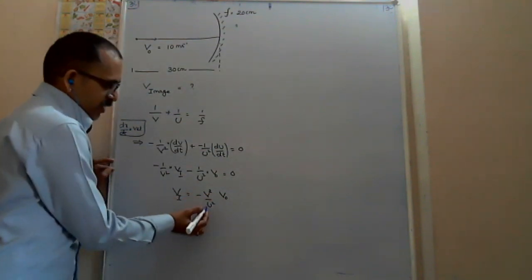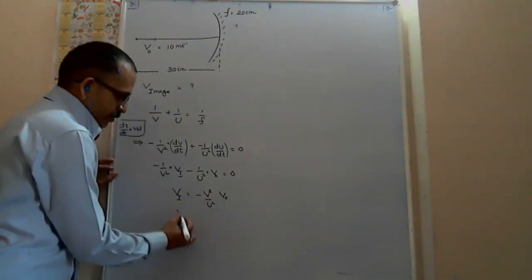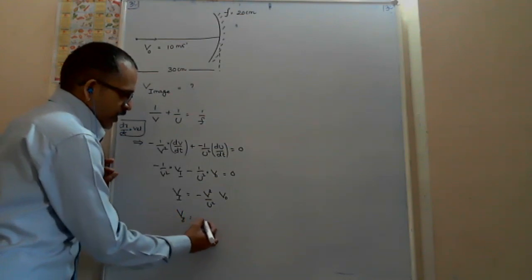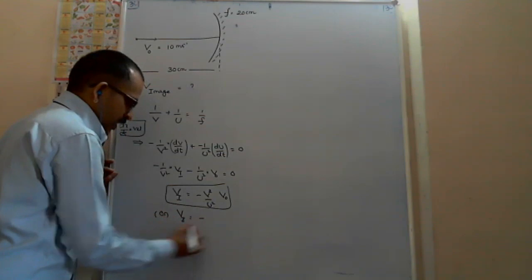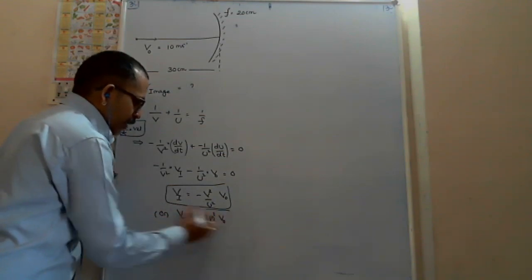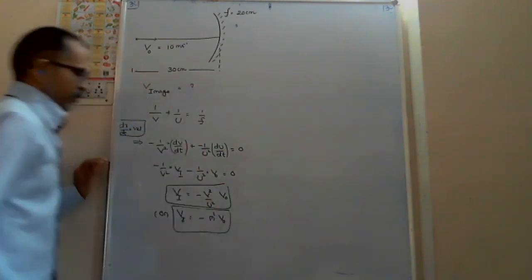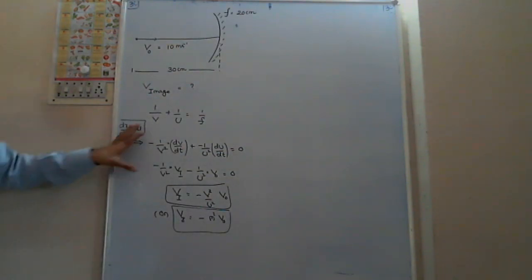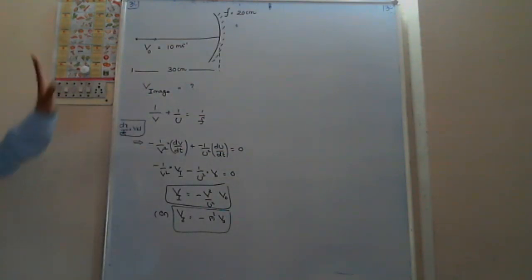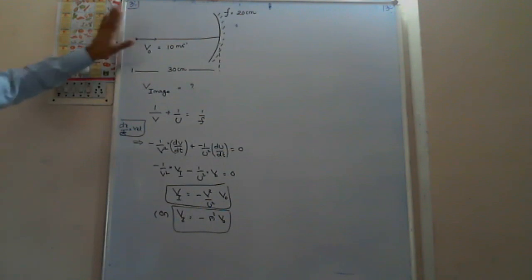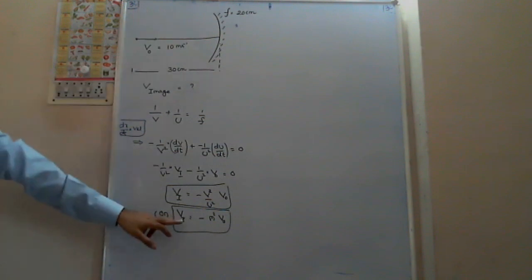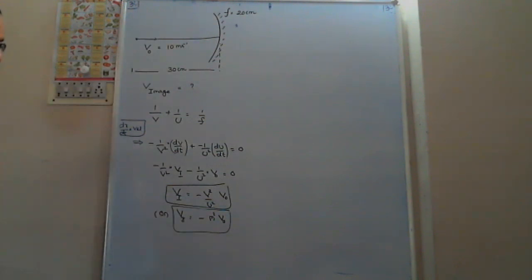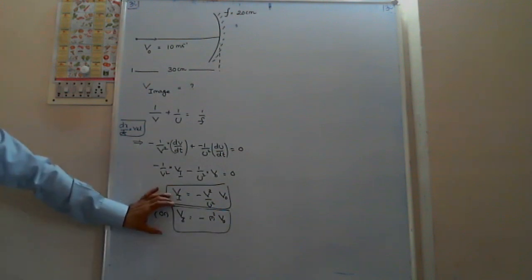So velocity of image equals minus V² / U² into velocity of object. But V/U is the magnification, so you can write velocity of image equals minus m² into V_object. You can remember it as a formula. Theory: when the object moves along the principal axis, velocity of image equals minus m² into v_naught.